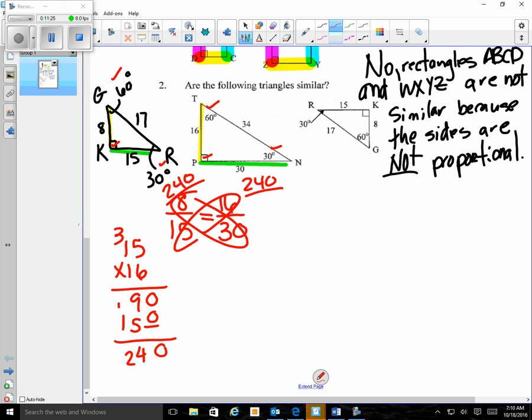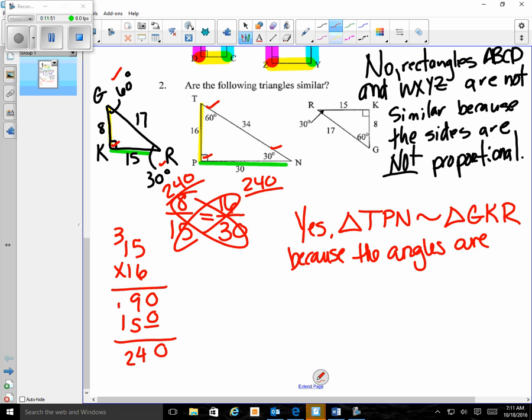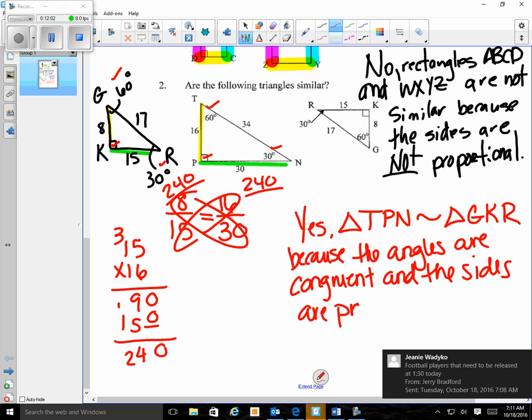So because my cross products are the same and my angles are congruent, my corresponding angles are congruent, I'm going to say yes, triangle TPN is similar to triangle GKR, because the angles are congruent and the sides are proportional.